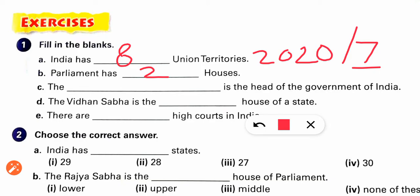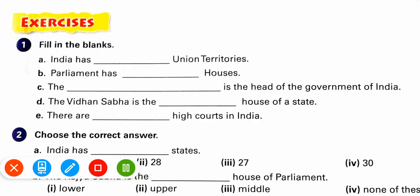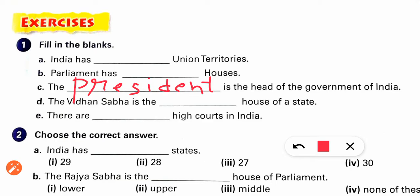Do remember: Parliament has two houses — Lok Sabha and Rajya Sabha. Who is the head of the Indian government? The President. The President is the head of the Indian government. The Vidhan Sabha is the house of the state.